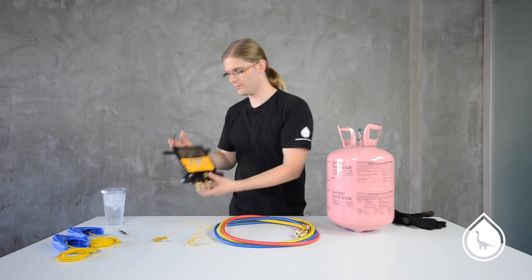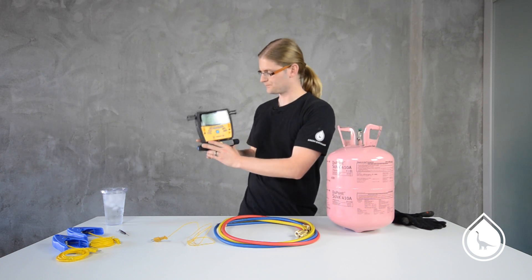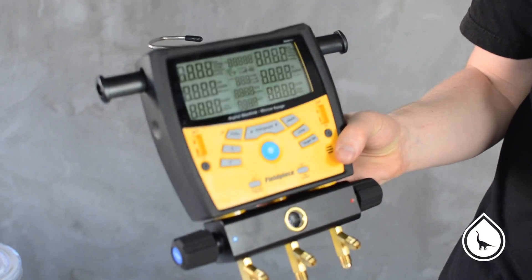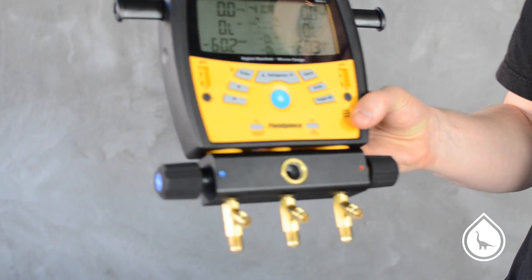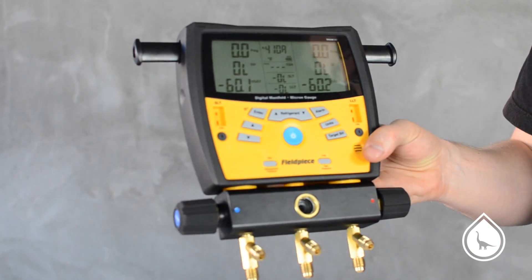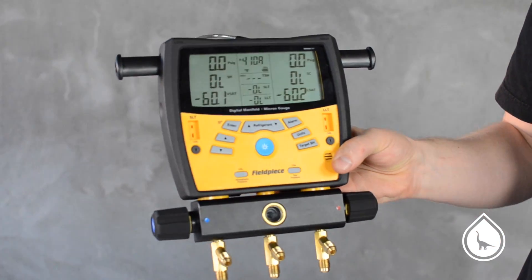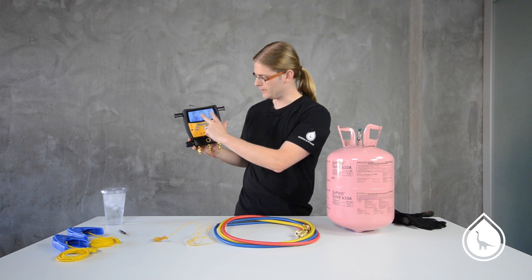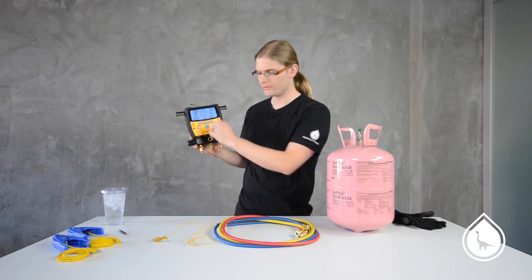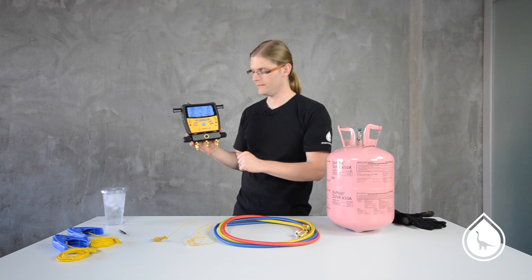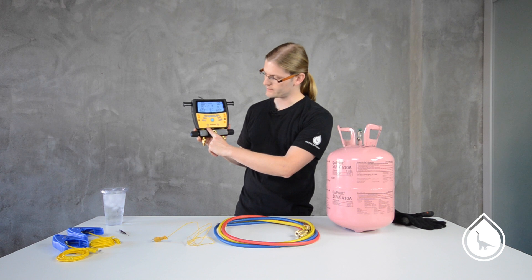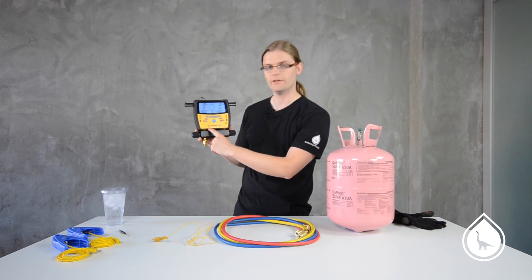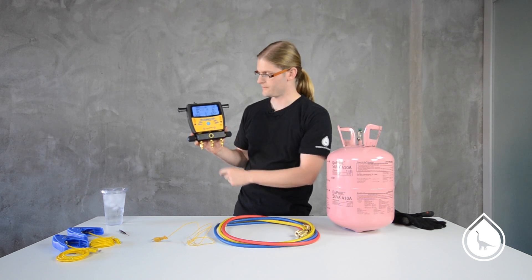So to get started, first thing you want to do is turn the gauge on and check that the pressures are reading zero with no hoses attached and open to the atmosphere. We're in good shape here. They're both reading zero. If we had anything there, we would zero it out by pressing the calibrate atmospheric pressure button down at the bottom.